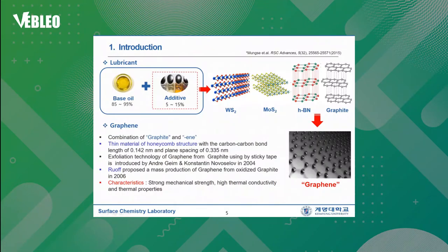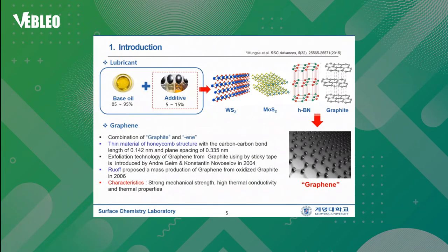Lubricant consists of 95% base oil, which provides the actual lubrication, and 5% additives, which enhance the function of base oil. Even though a small amount of additives is added, it influences a lot on the function of lubricants. In the past, layer-structured materials such as WS2, MoS2, hexagonal boron nitride, and graphite have been used as solid lubricants. But these inorganic materials do not show good dispersibility in organic liquid lubricants. For that reason, graphene — a single-layered 2D material discovered in 2004 — has attracted attention in the field of lubrication.